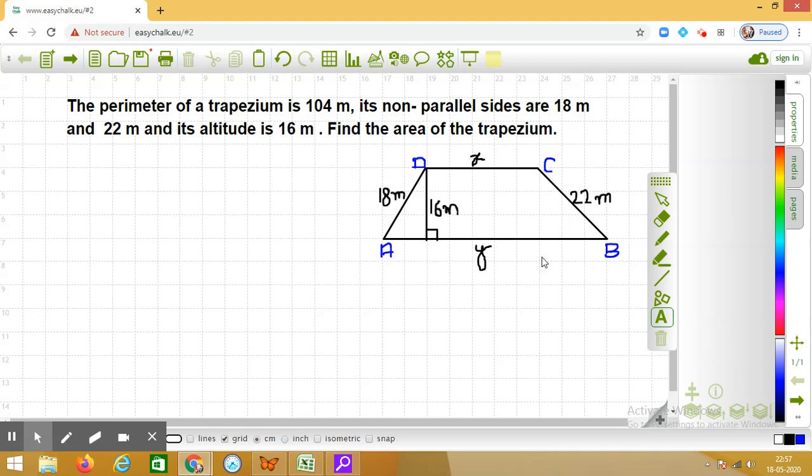As you can see, here I have drawn the diagram. A, B, C, D is the trapezium. I have marked the non-parallel sides as AD 18 meters and BC 22 meters. The parallel sides are marked as X and Y. CD is X meters and AB is Y meters.